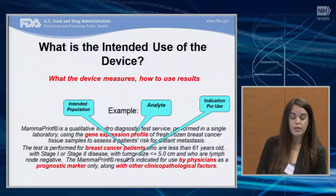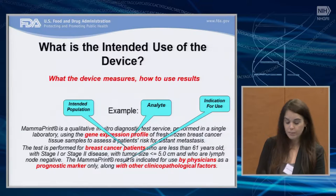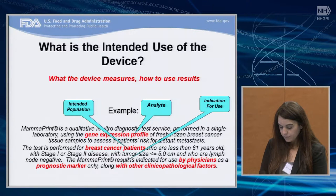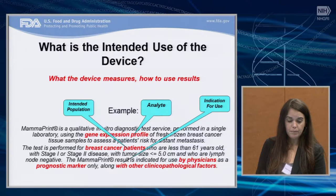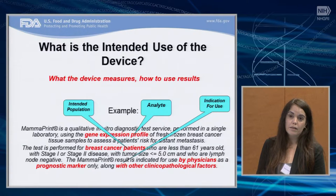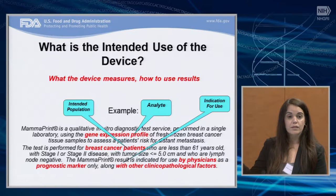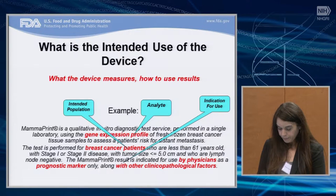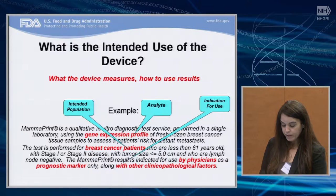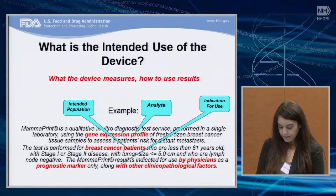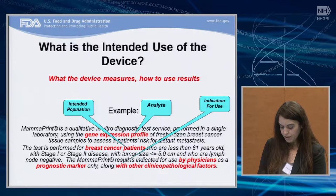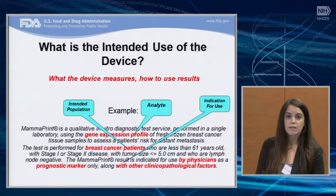It's very important to understand the concept of the intended use as we use the term at FDA. It's really critical to understand when your device may be investigational. When we receive anything from any company or any investigator, the intended use is the first thing we look for, so we can understand what this device is and what it is supposed to do. The intended use explains what the device measures — we call this the analyte. The intended use indicates who is eligible to receive the test — we call this the intended use population. And it also includes the indications for use, that is, how the test result is used.